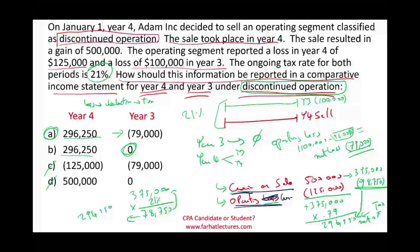For Year 3, we only have one line because we operated the business but did not sell it. This is a good question about discontinued operations — an important topic on the CPA exam. Go to Farhat and keep working multiple choice questions and look at additional resources to help understand this topic better. Good luck, study hard, and stay safe.